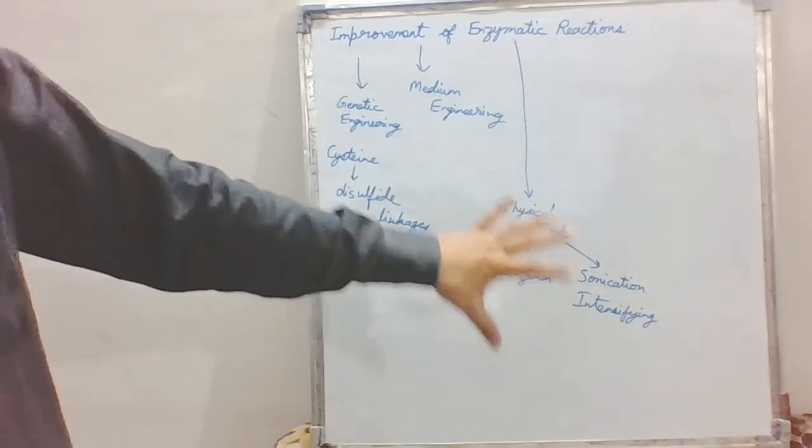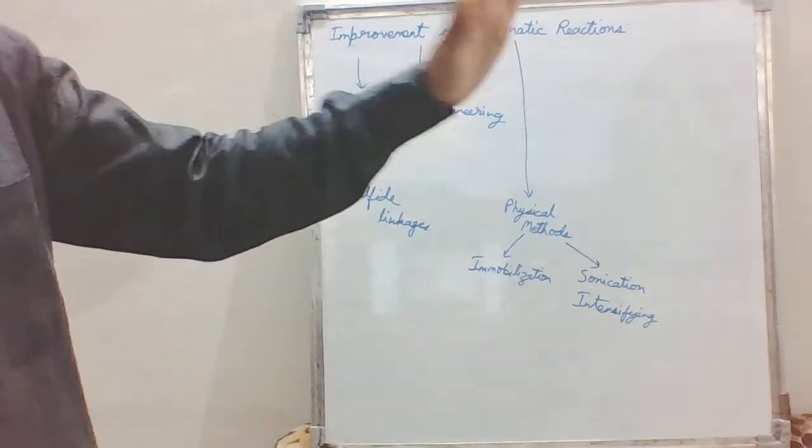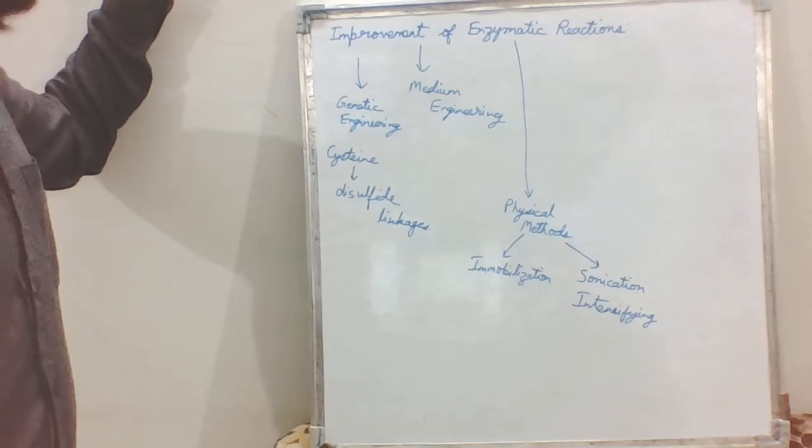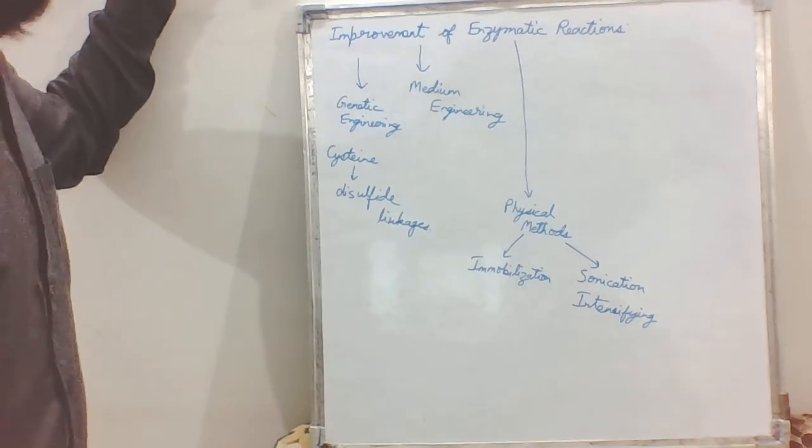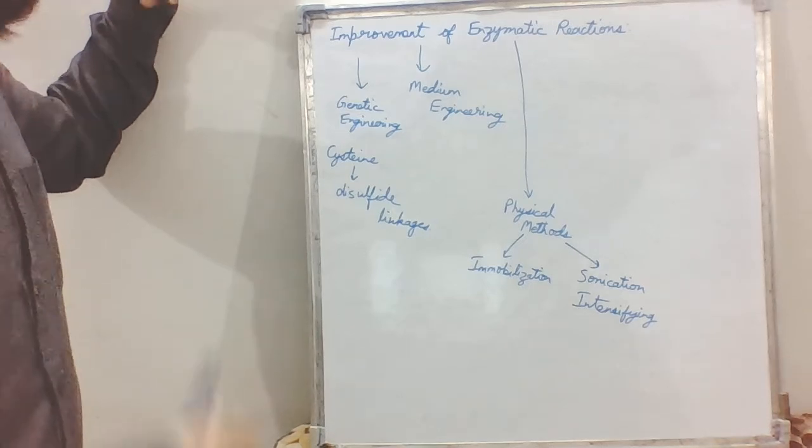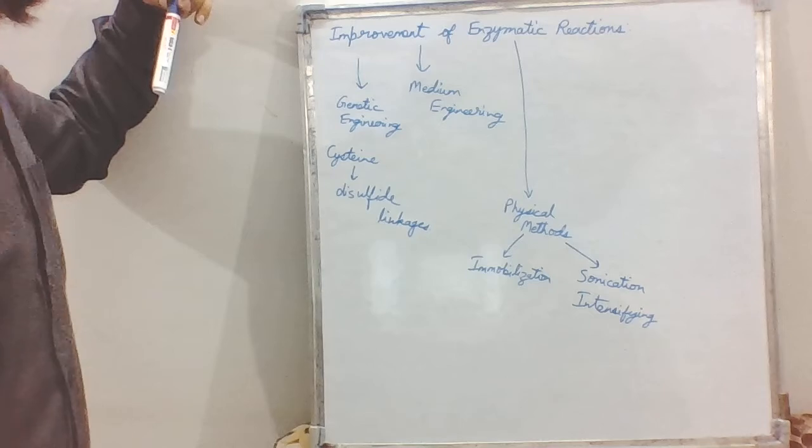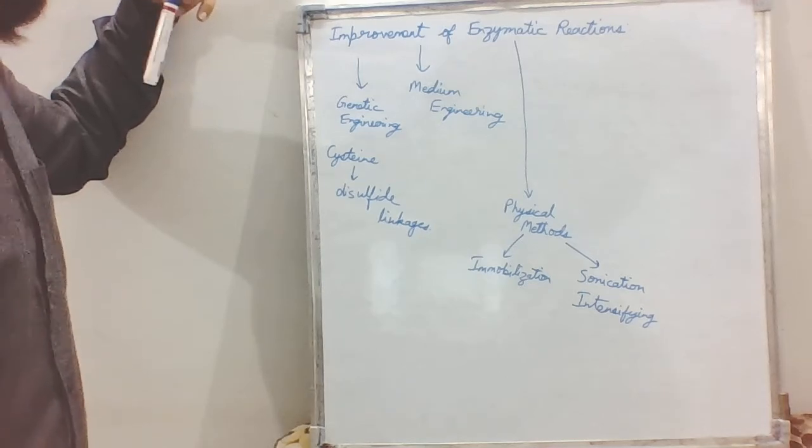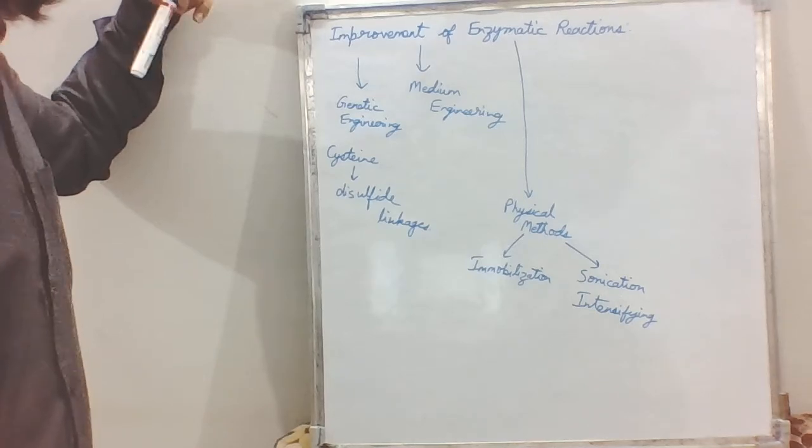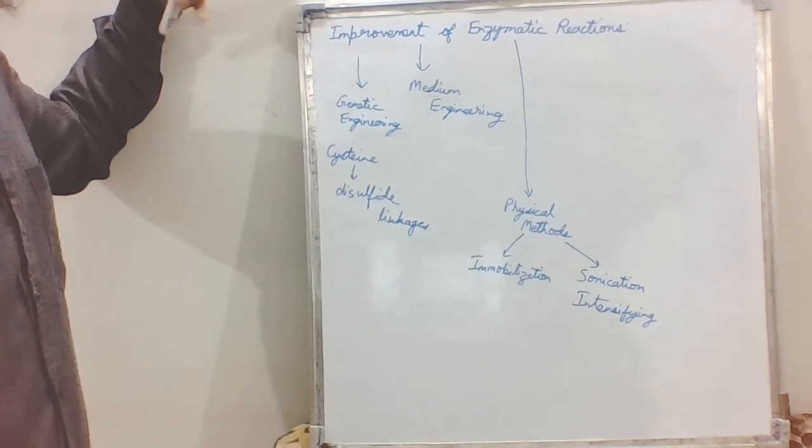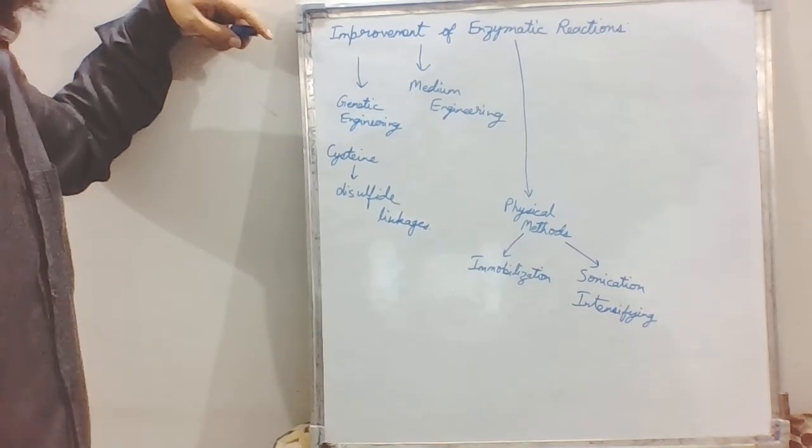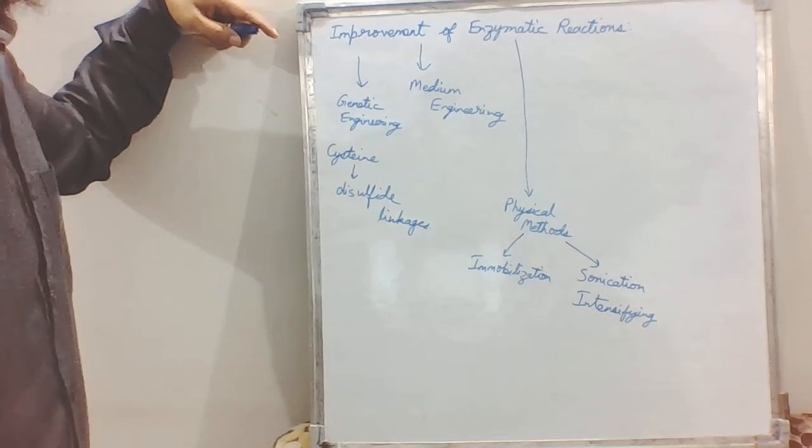These are all methods for improving the enzymatic reactions. This can be implemented when one is working on various enzymatic reactions. Only after implementation we can make out which method will be the best method for improving the enzymatic reactions. Hope you have understood the improvement of enzymatic reactions. Till my next lecture, goodbye.